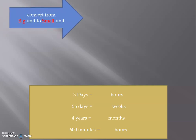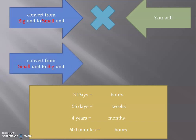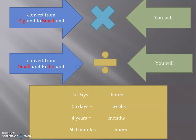To convert from a big unit to a small unit, you will multiply. And to convert from a small unit to a big unit, you will divide. Let us see some examples.